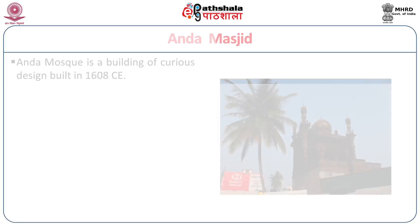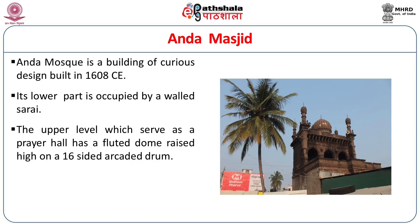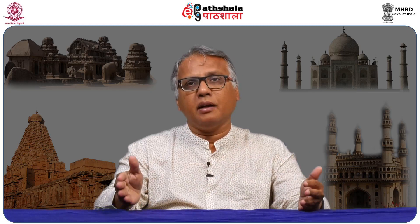The Andha Mosque is a small building of curious design built in 1600 CE. Its lower part is occupied by a caravanserai. It is called the Andha Mosque because its shape resembles an egg. The upper level serves as a prayer hall with a fluted dome raised high on a 16-sided arcaded drum.